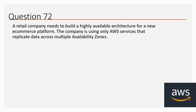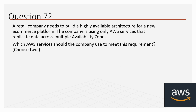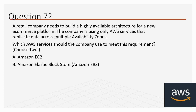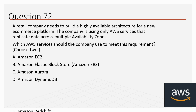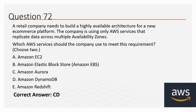Question 72: A retail company needs to build a highly available architecture for a new e-commerce platform. The company is using only AWS services that replicate data across multiple Availability Zones. Which AWS services should the company use? Choose two options. A: Amazon EC2, B: Amazon Elastic Block Store, C: Amazon Aurora, D: Amazon DynamoDB, E: Amazon Redshift. The correct options are C and D — Amazon Aurora and Amazon DynamoDB.